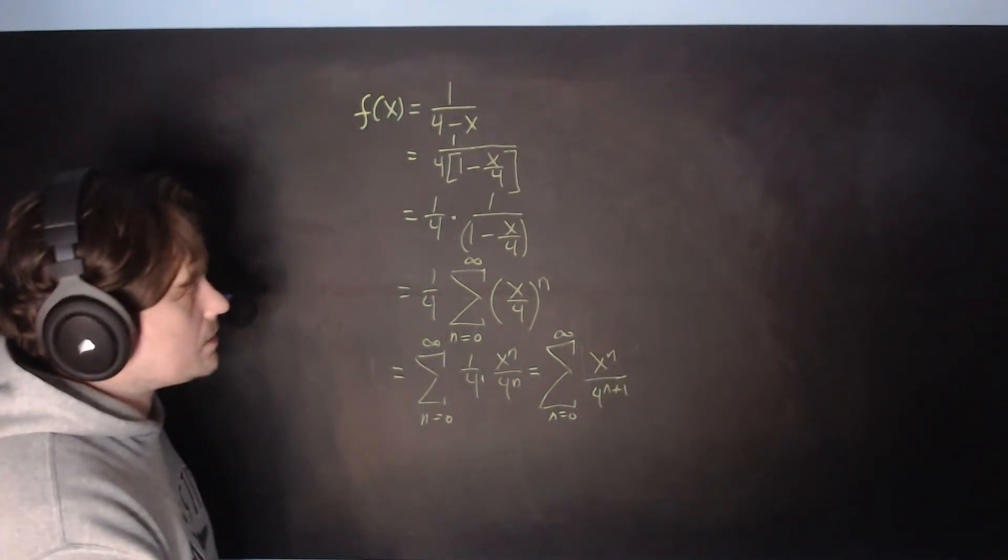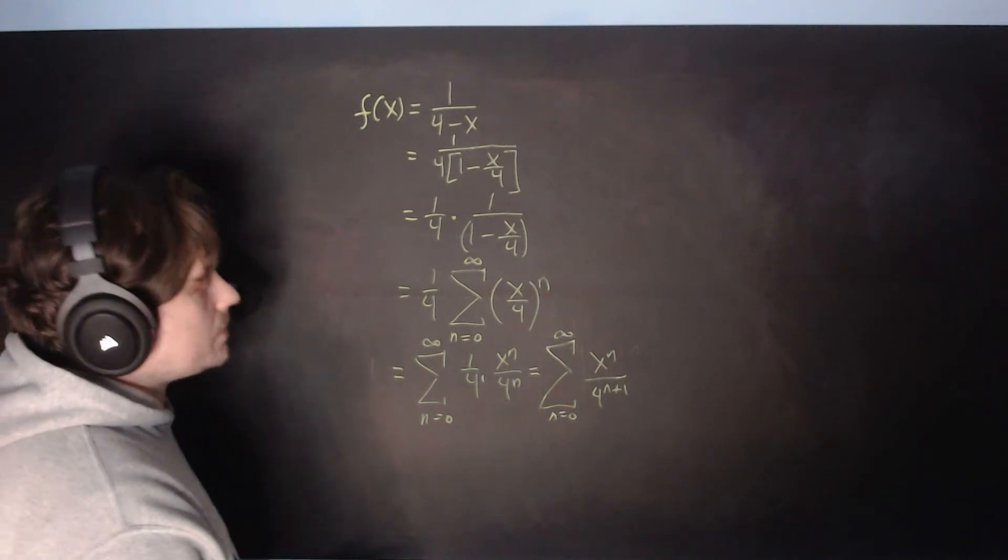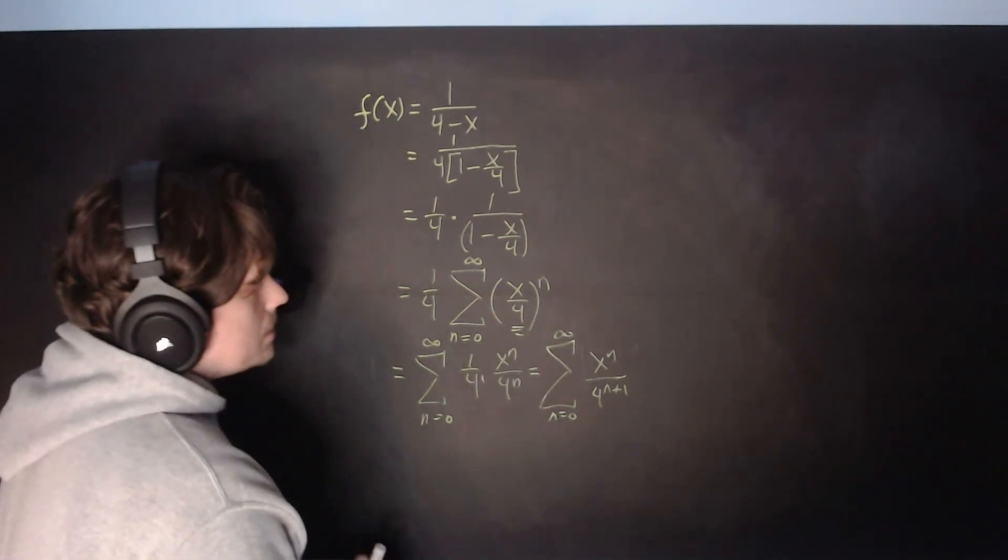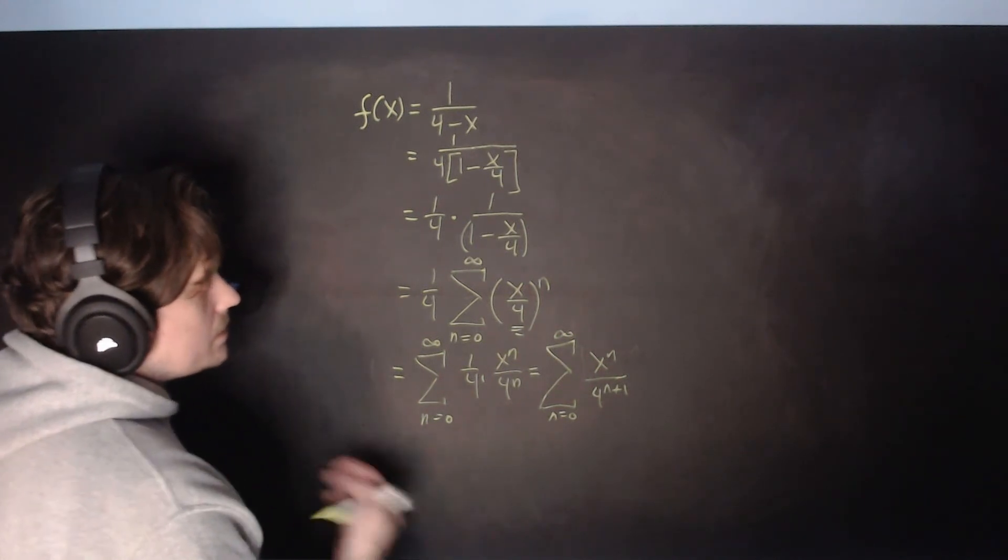And also, what's interesting here is the interval of convergence. So how do we find the interval of convergence? Take this quantity right here, and just in absolute value, set it less than 1, and then solve that inequality.